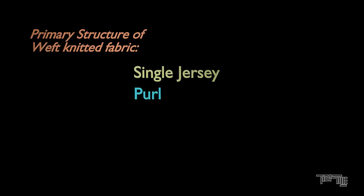There are four primary structures for weft knitted fabrics. They are: 1. Single jersey, 2. Purl, 3. Rib, and 4. Interlock. These structures are classified into four basic groups according to the arrangement of loops in their courses and wales.